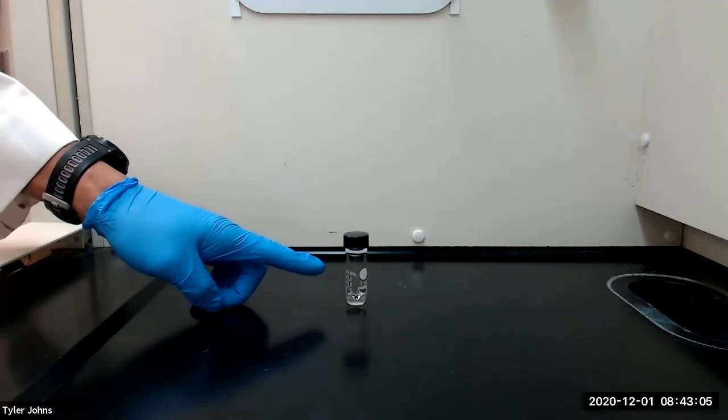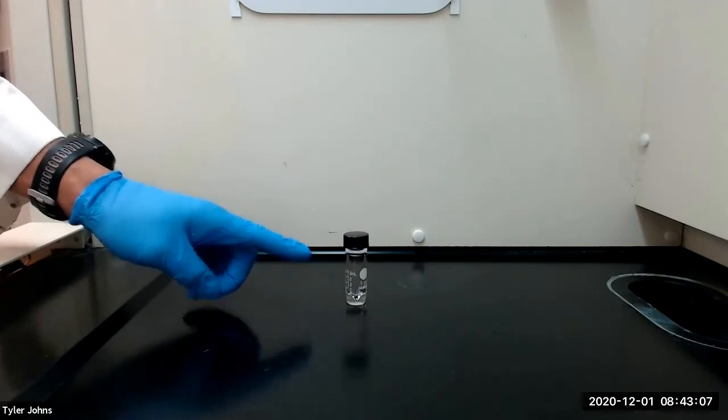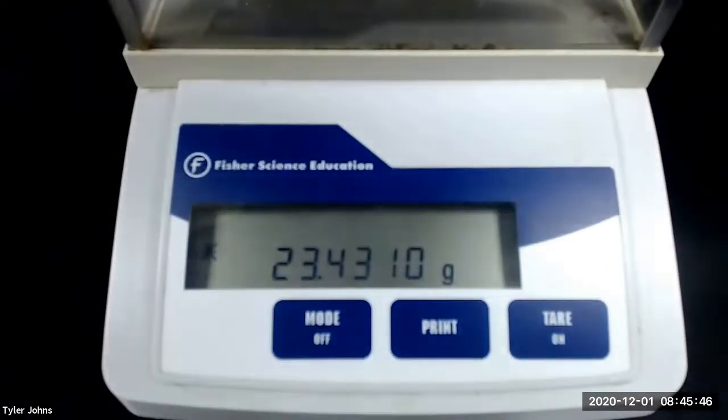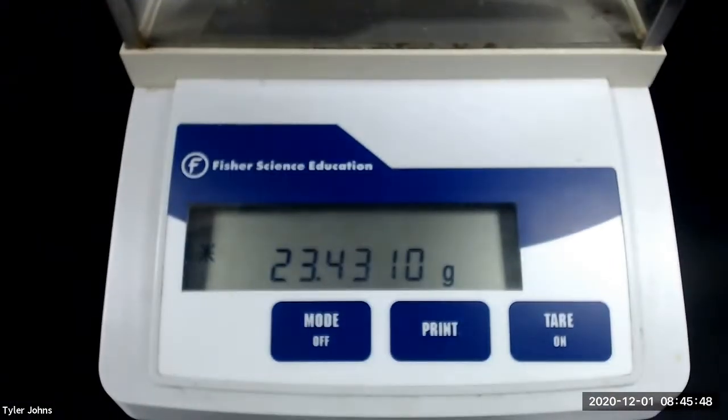We will begin by pre-weighing a 5-milliliter conical vial. The mass of the pre-weighed 5-milliliter conical vial is 23.4310 grams.